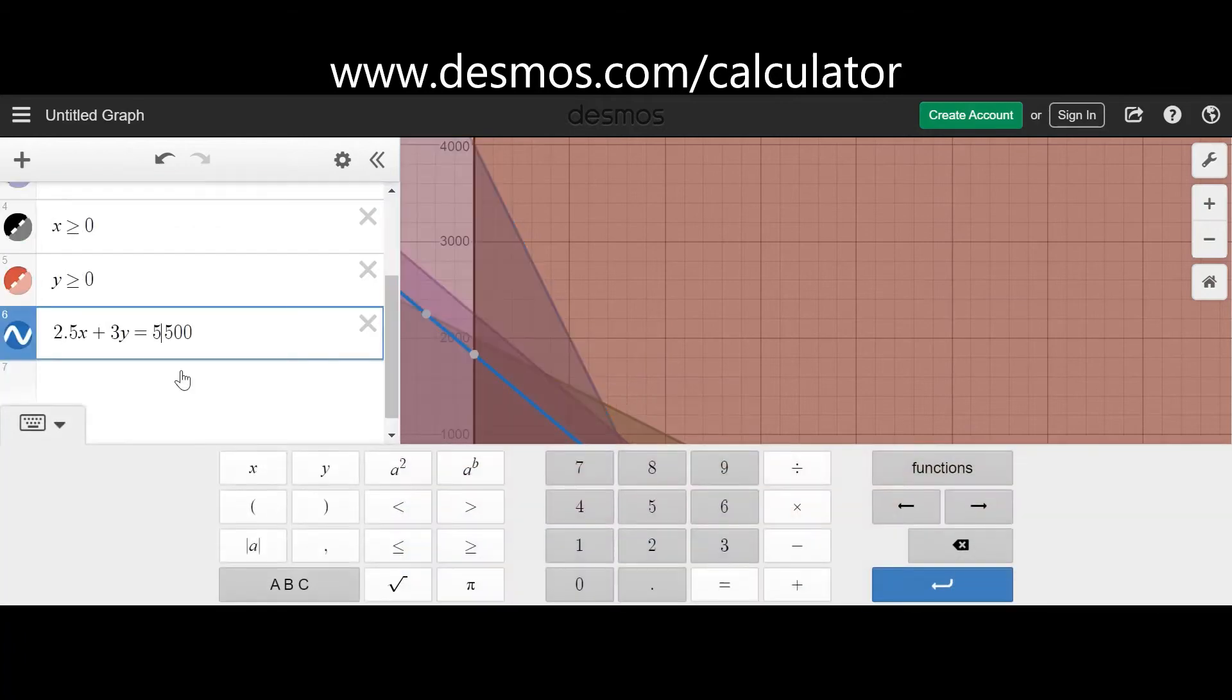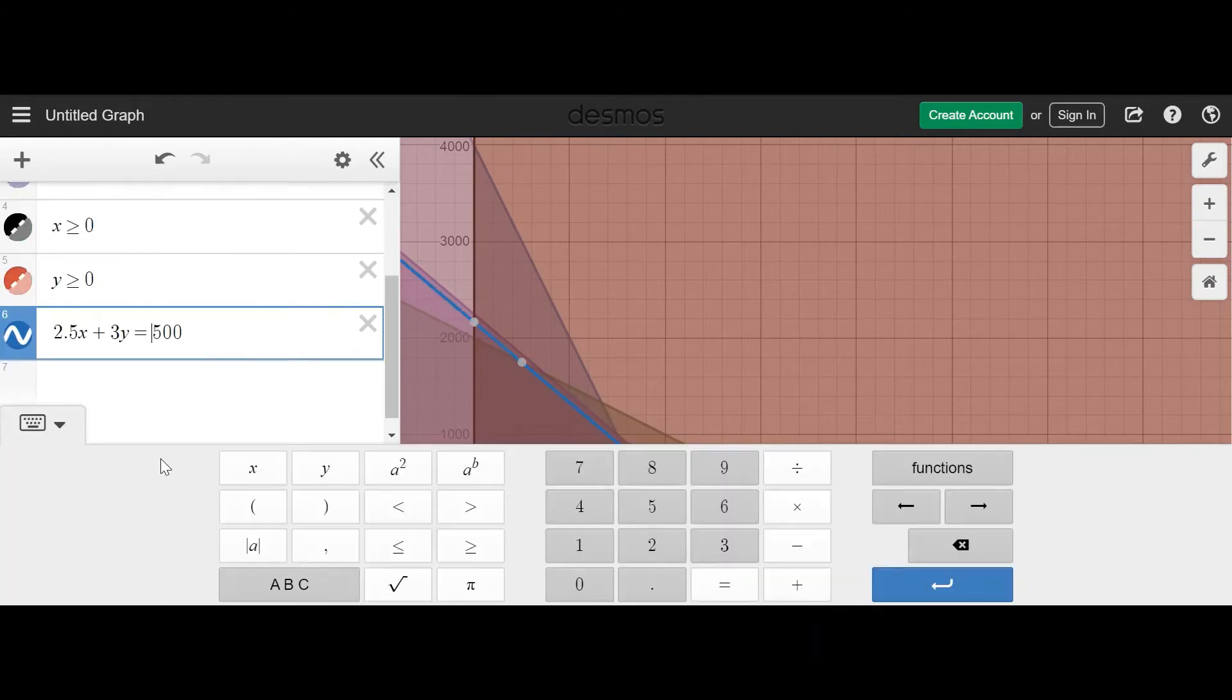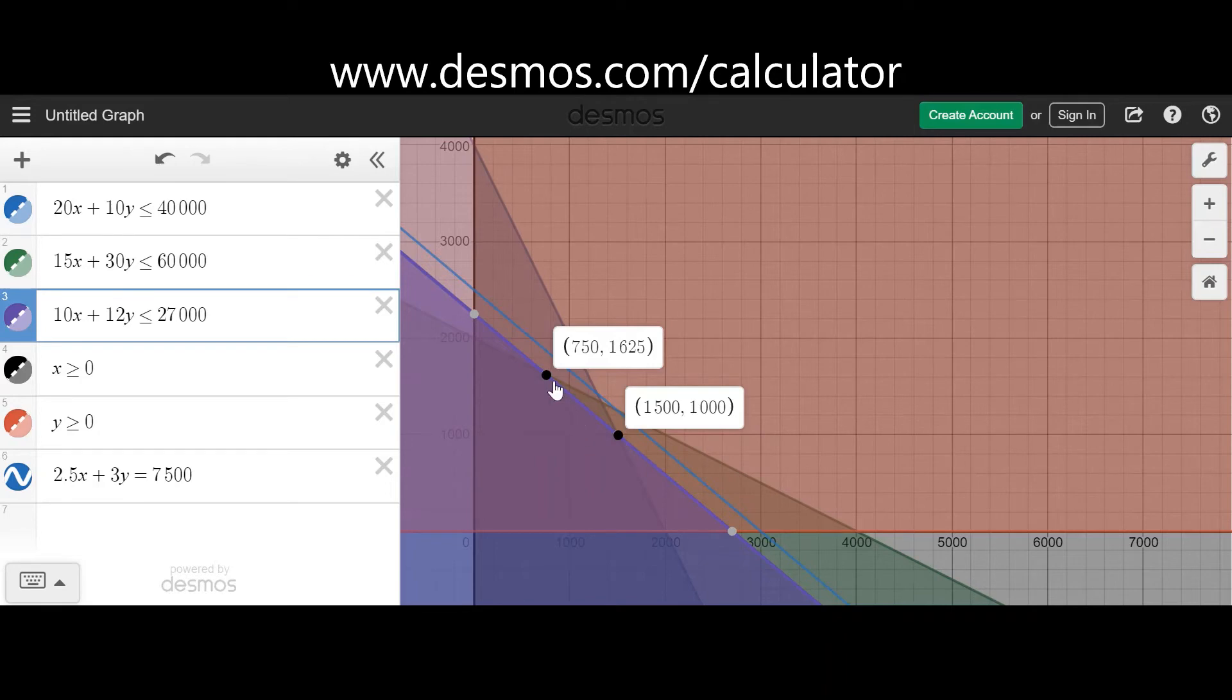If I change this to 6,500, you'll see the line is approaching the equation for pears. If I go 7,500, then it has gone past it. But we have to find the value when it gives maximum. So what I'll do is click and drag along this line to get all the possible values.